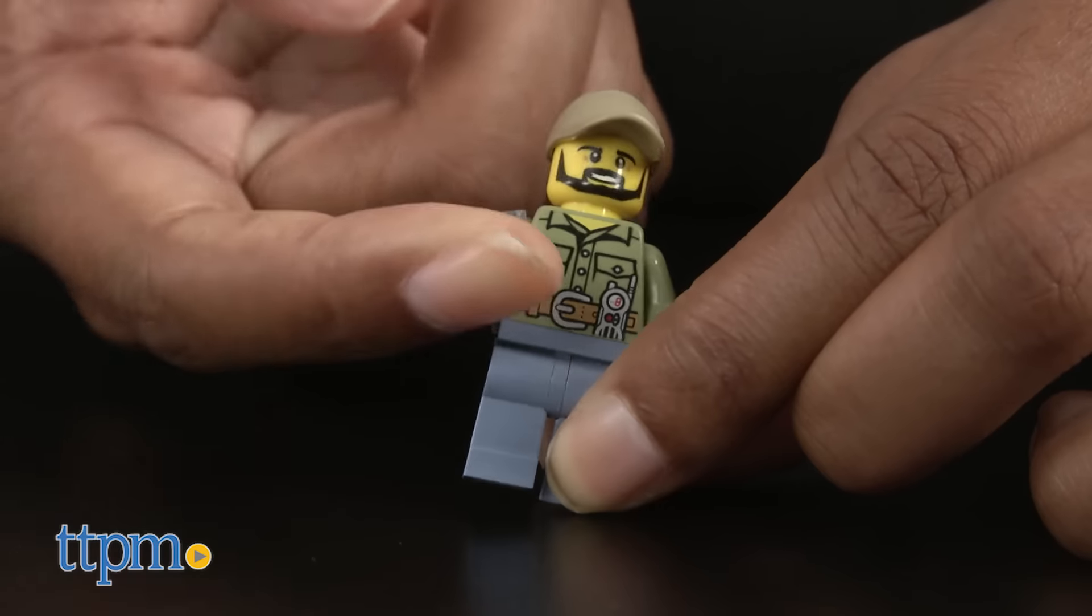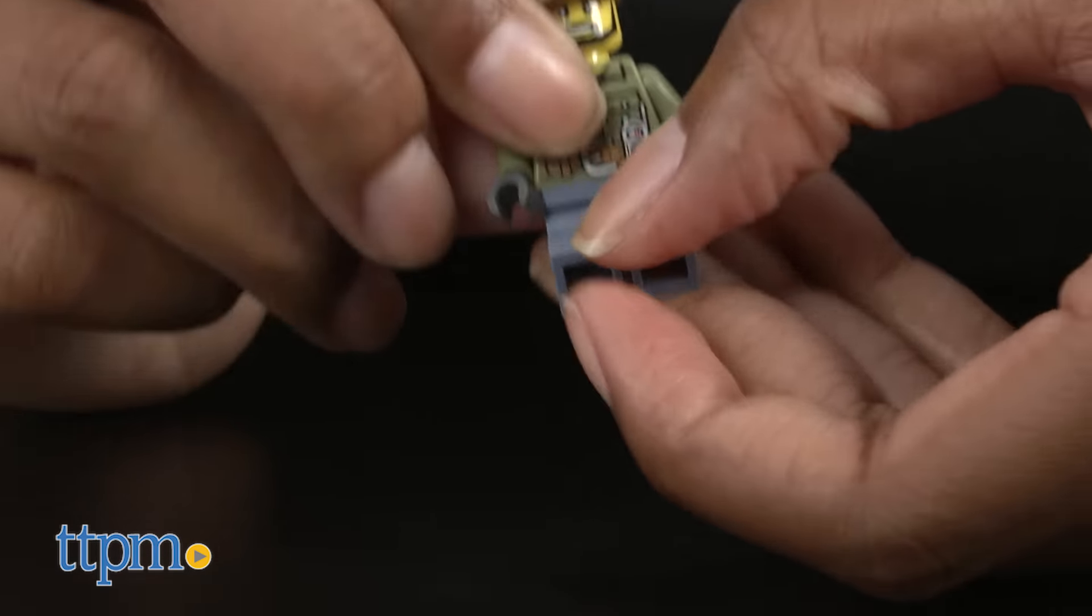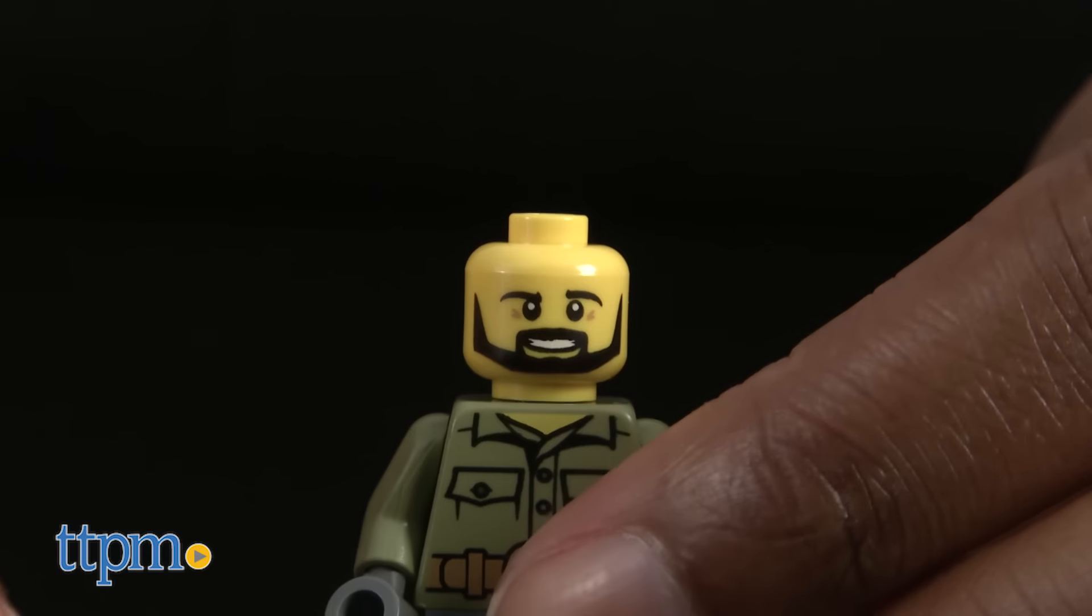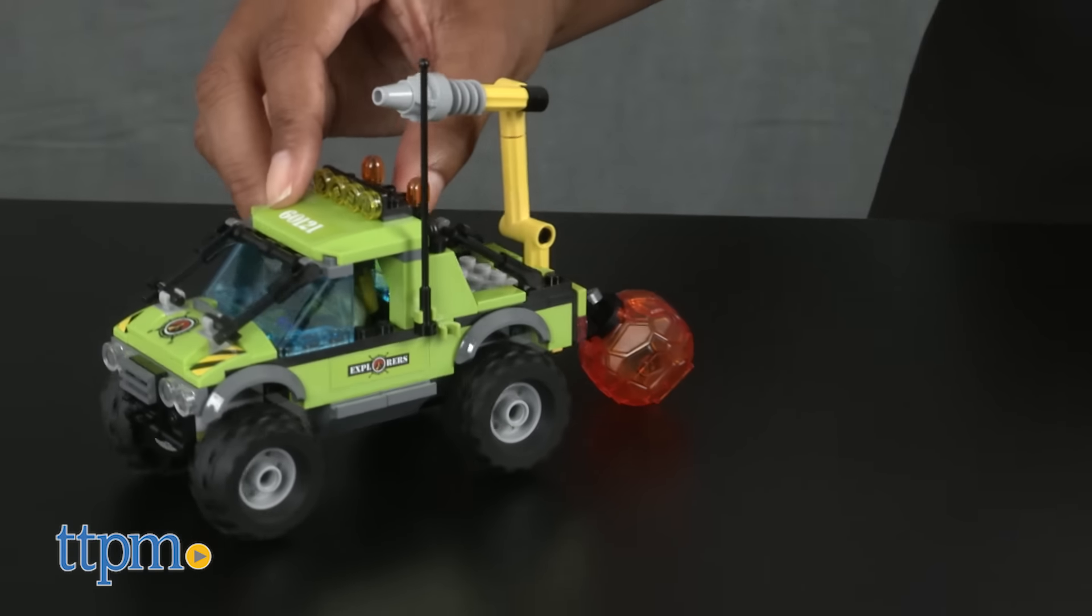The LEGO minifigures' heads, arms, and legs move, and the headgear accessories are all removable. The volcano exploration truck has large tires and rolls well on carpet and hard surfaces. It's great for push-along play.